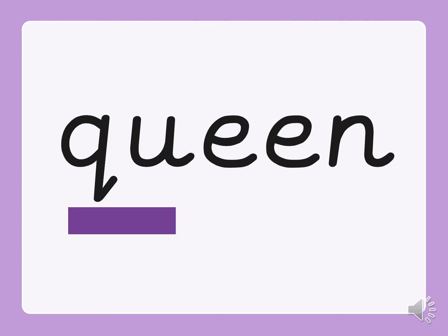Now this word has got two diagraphs in. Can you see them? Qu, i, z, n — qu, i, z. Queen.